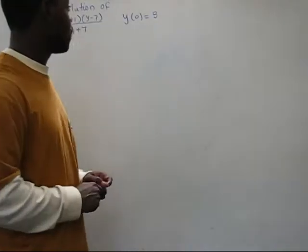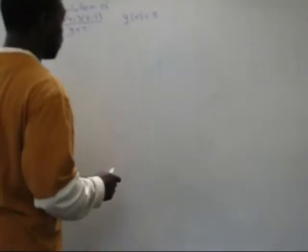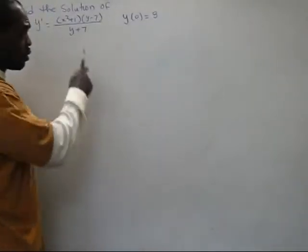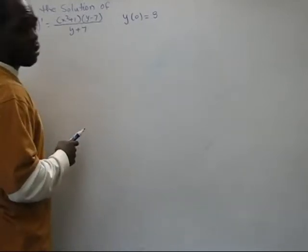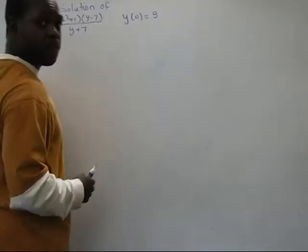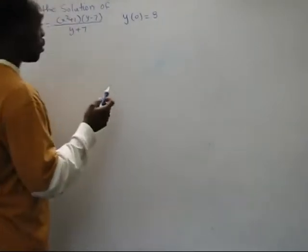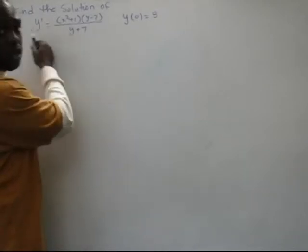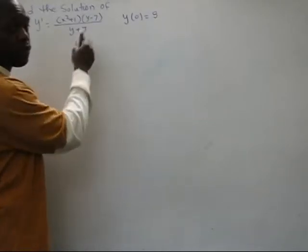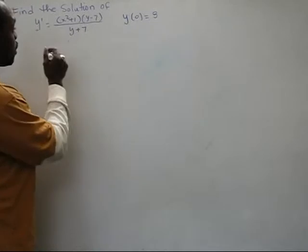The separation of variables - I need to solve the equation. I have one initial equation. The first thing I'm going to do is separate them. I'm going to put everything with Y on one side, everything with X on the other side. As you can see, I'm going to multiply everything by Y plus 7 and divide everything by Y plus 7.